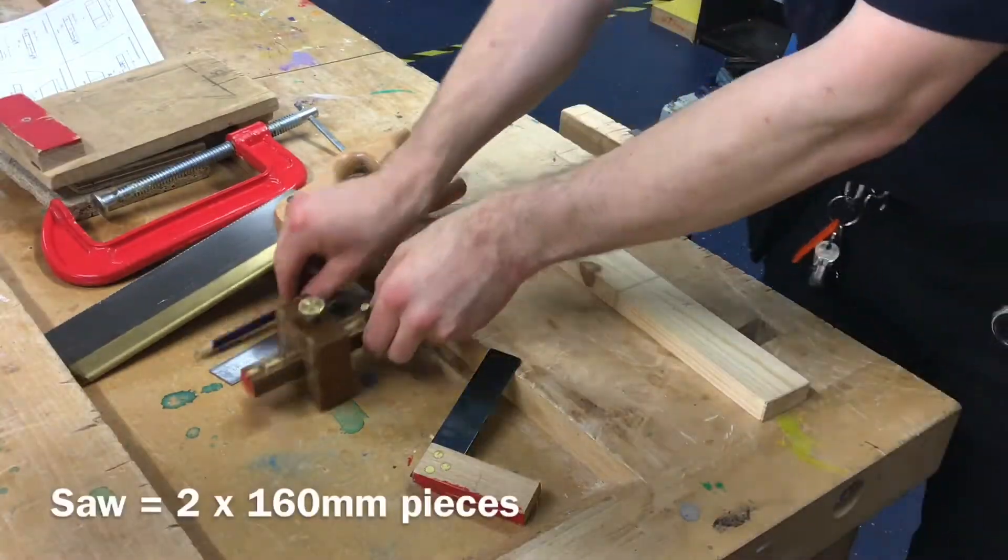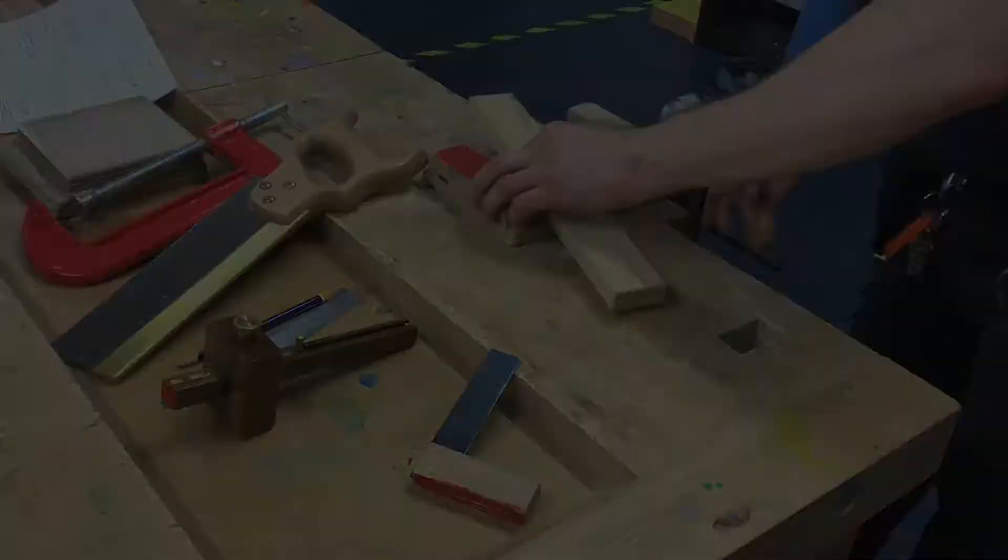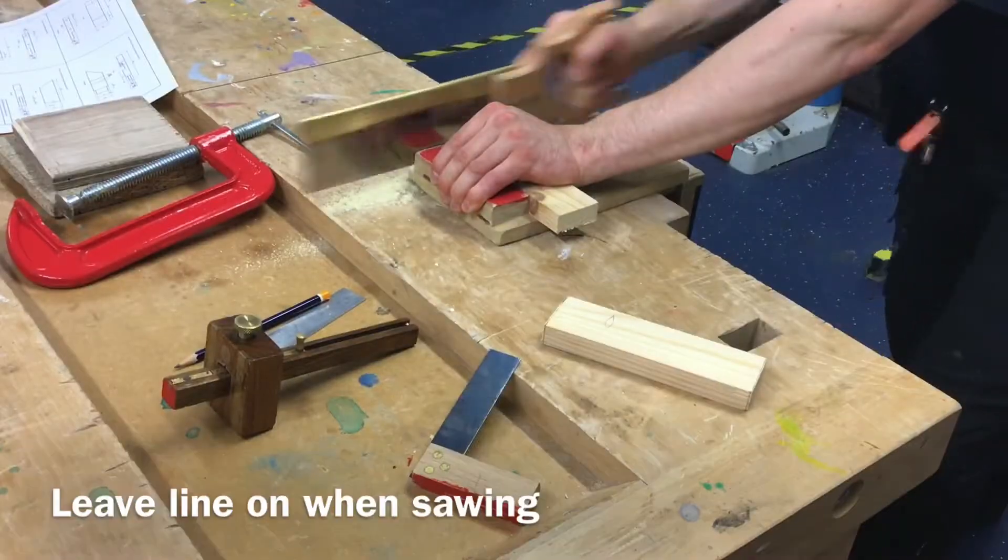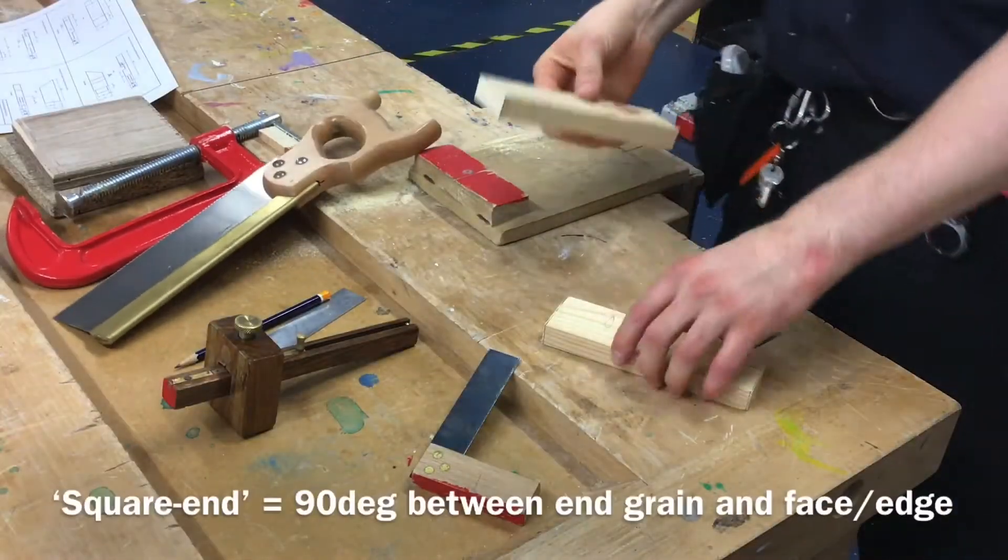I'm going to cut them quickly with my bench hook and tenon saw, cutting so I'm just leaving the line on and no more. That's then both cut and now what we need to do is square the ends.